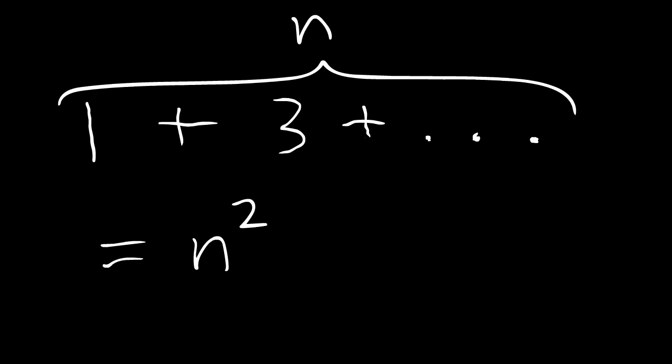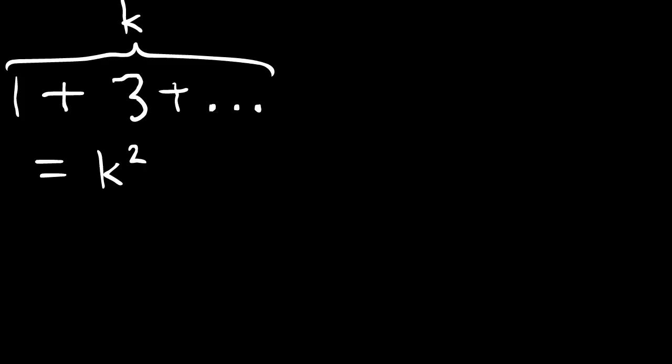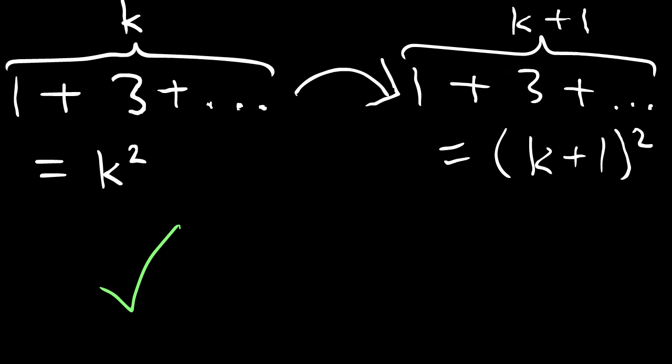Using induction on our n squared problem is the way to prove this. We know that our base case works, since the sum of the first one odd numbers, one, is one squared. Then we assume that a generic k works, and try to prove it for k plus one.